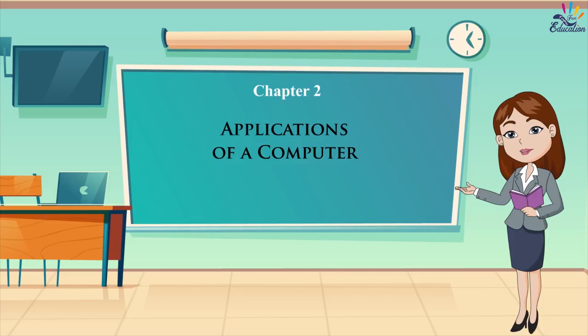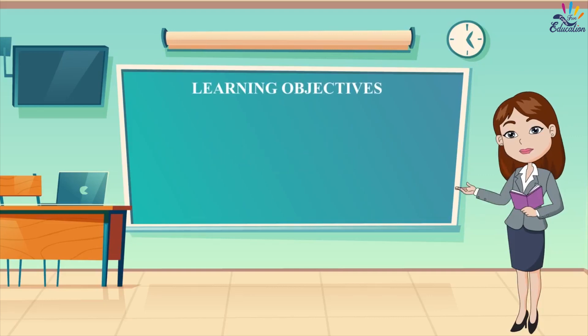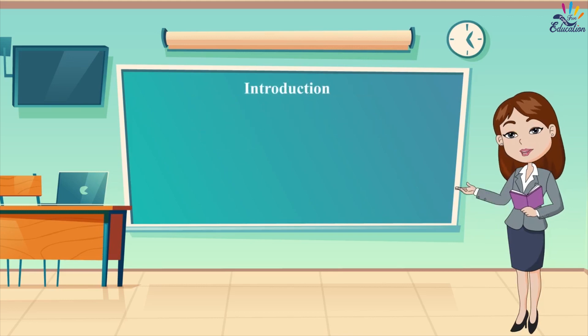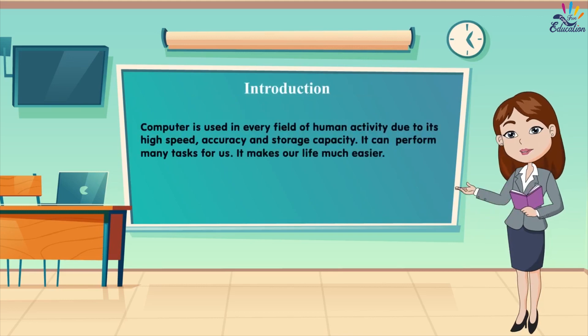Chapter 2: Applications of a Computer. Learning Objectives: Uses of a Computer, Some Places where Computers are Used. Computer is used in every field of human activity due to its high speed, accuracy, and storage capacity. It can perform many tasks for us and makes our life much easier.